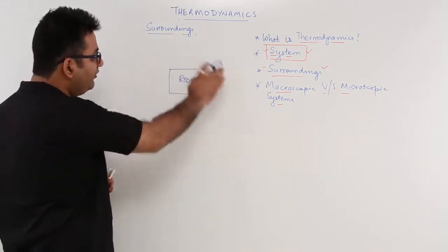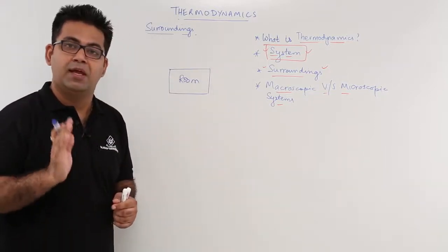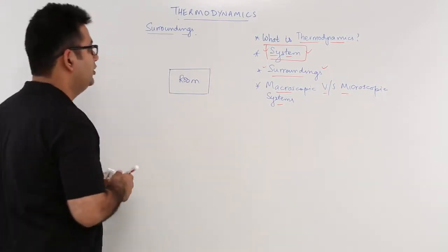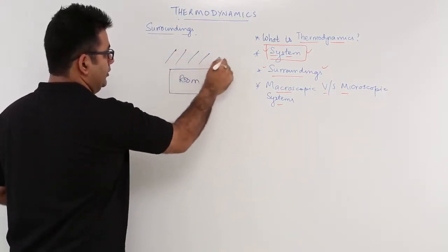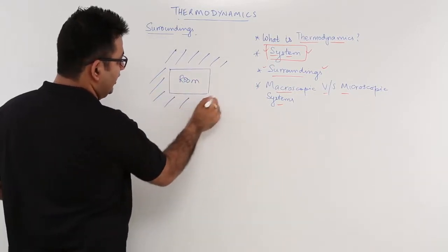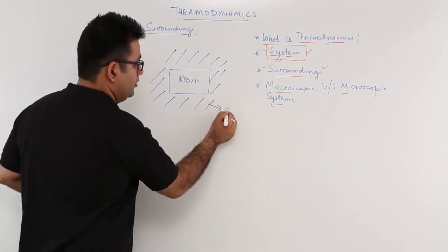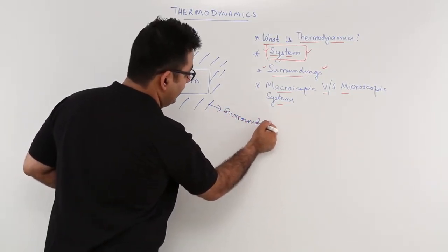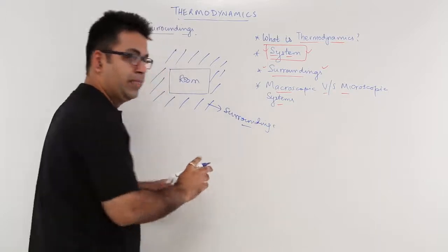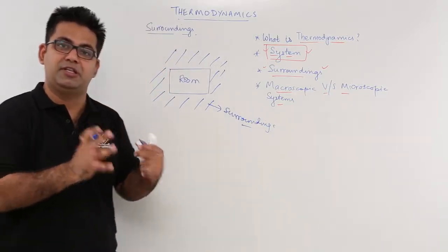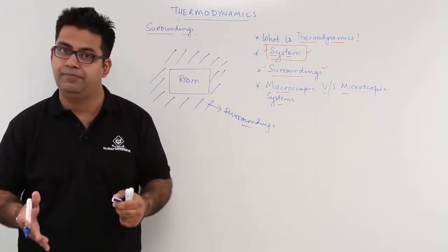Whatever which is outside the system is our surroundings. This outside area are surroundings. In a nutshell, I can say anything which is not a part of the system is surroundings.